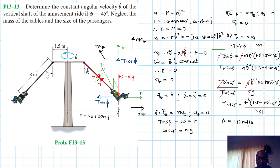All right. I guess this is about it. We have found the constant angular velocity theta dot of the vertical shaft of the amusement ride. And if this video is helpful, give me a thumbs up, like my video, continue subscribing and sharing my channel. Bye-bye, and see you in my next screencast.